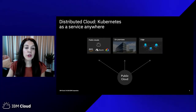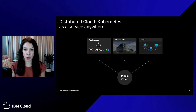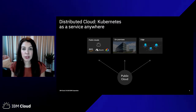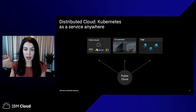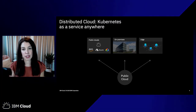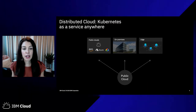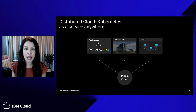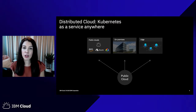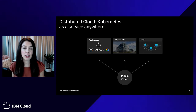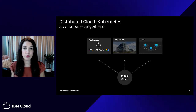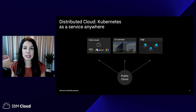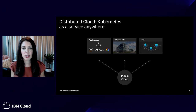Here's a scenario that's emerging to solve that problem: distributed cloud, or Kubernetes as a service anywhere. Gartner refers to it as distributed cloud, IDC calls it local cloud as a service. This is a concept where the public cloud is now extended to lots of different locations.